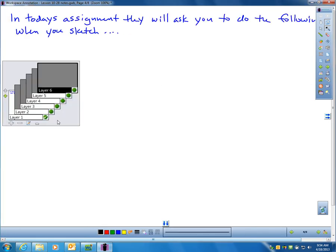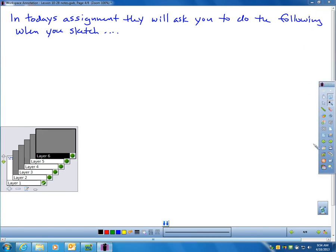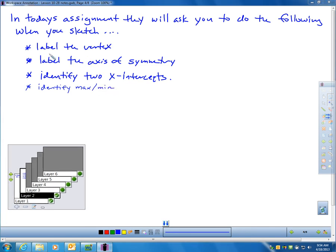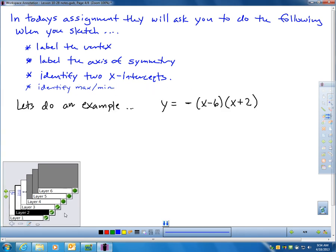In today's assignment, they're going to ask you, or I will ask you to do the following when you sketch. You're going to label the vertex. You're going to identify the 2 intercepts. Label the axis of symmetry. I should have wrote down 2 here also. Identify the maximum or the minimum. Those are the things that we should always do. Let's do an example.